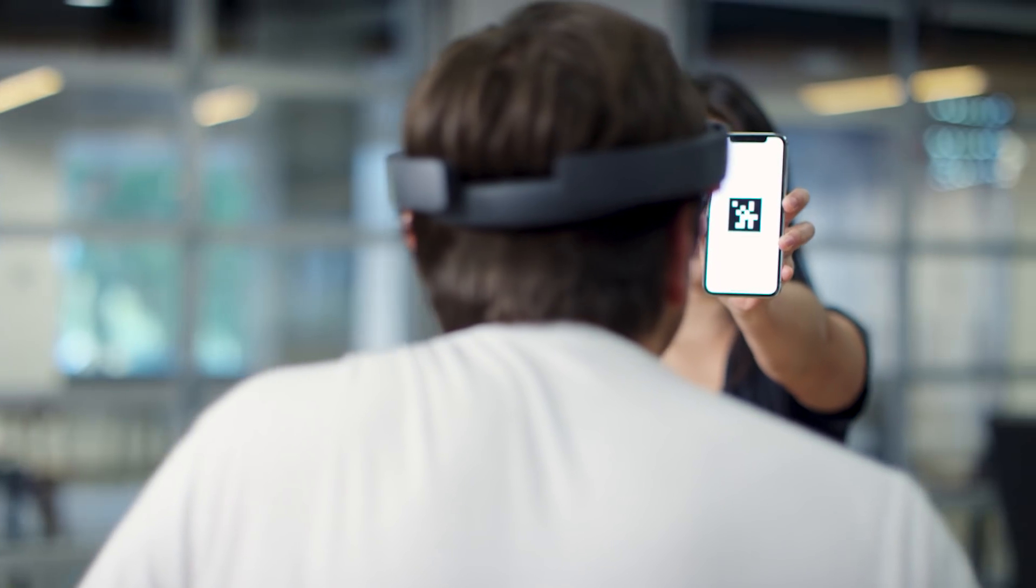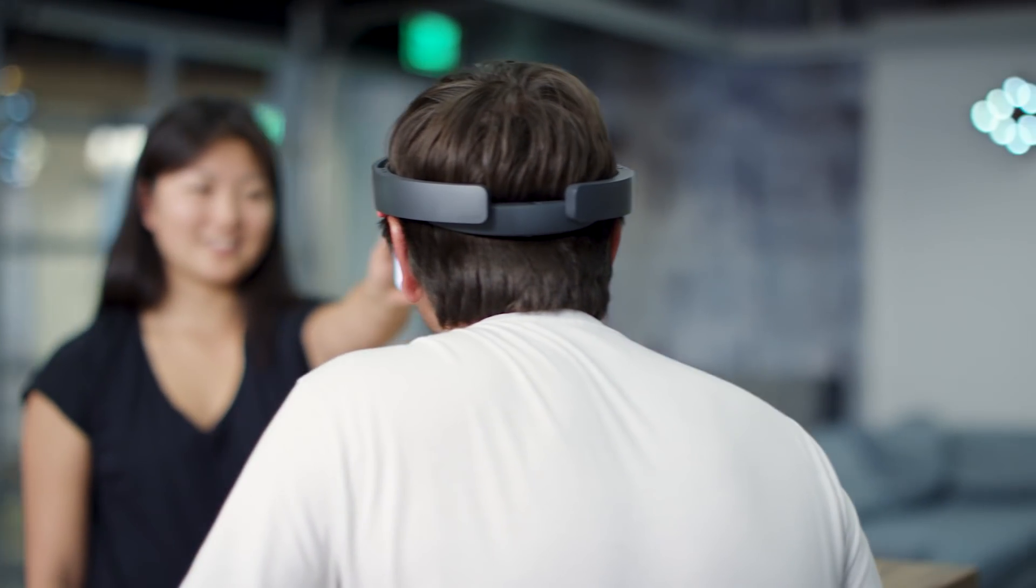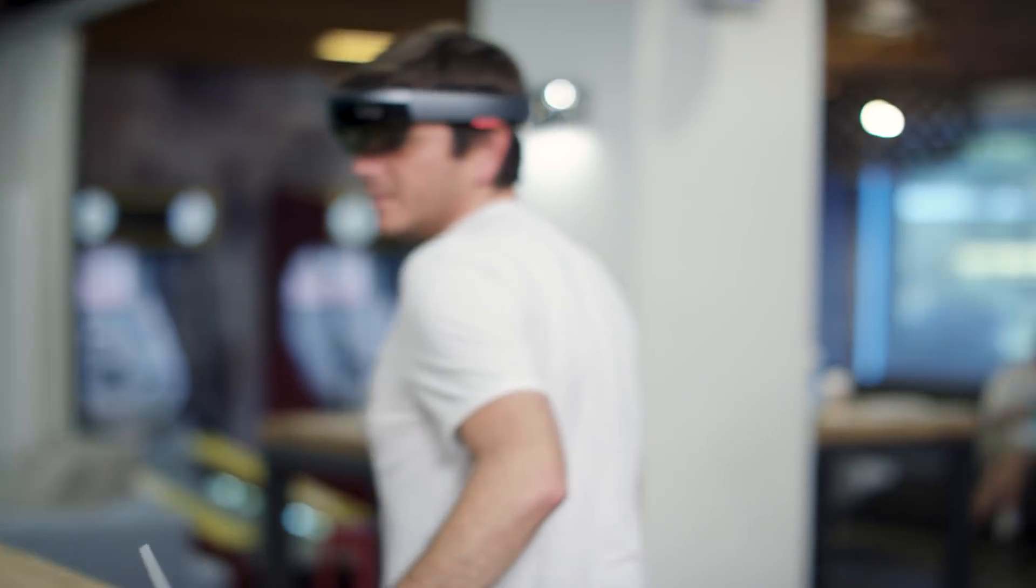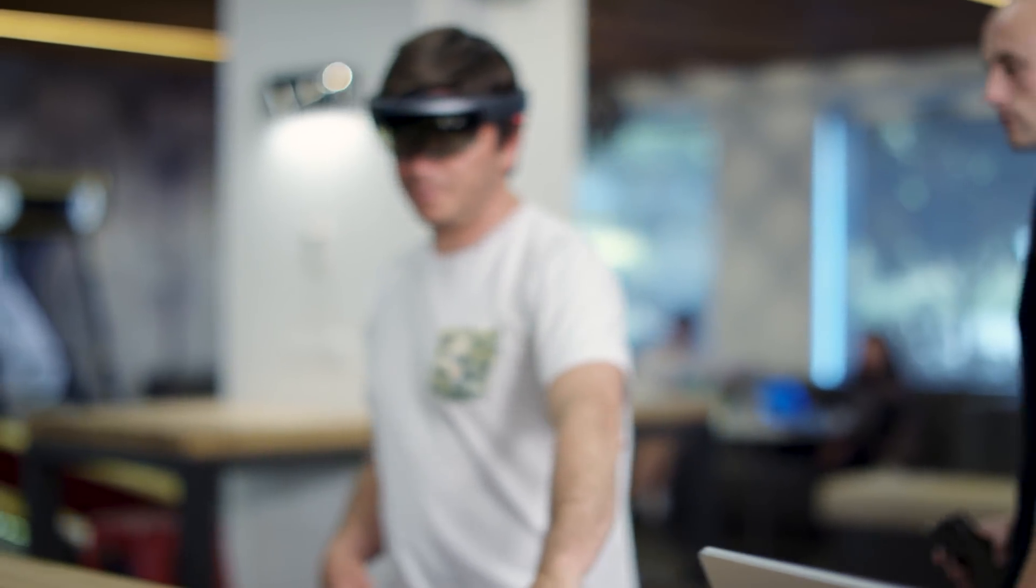The HoloLens will automatically start looking for codes. Once a code is scanned, the mobile device will be added to the HoloLens session. It will also receive spatial information in order to align its coordinate space to the HoloLens device's space.